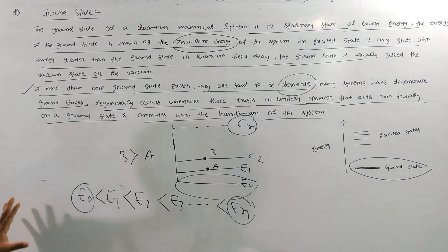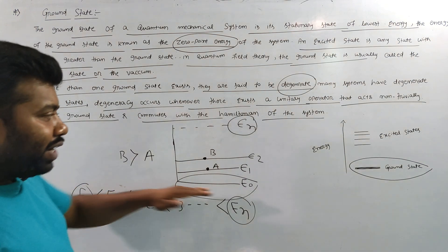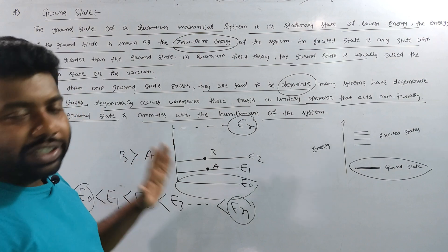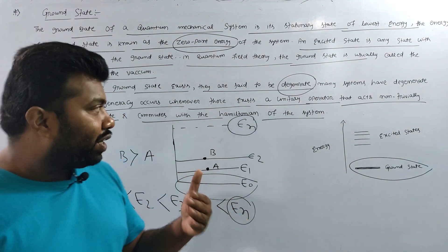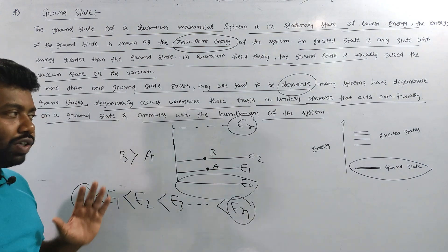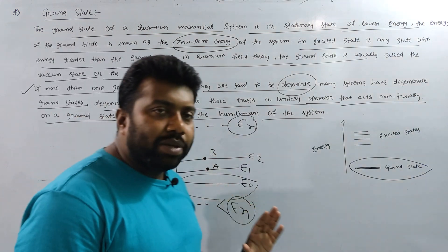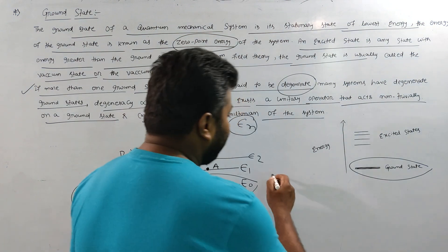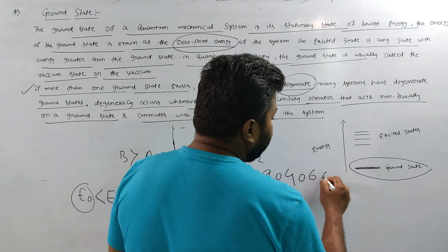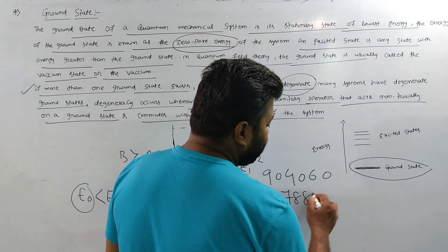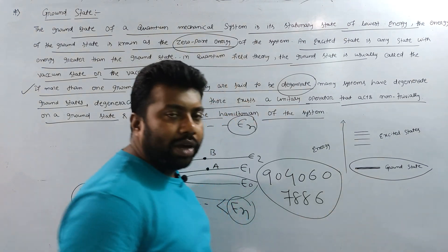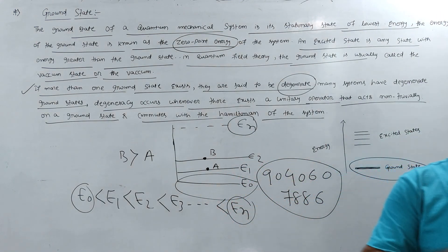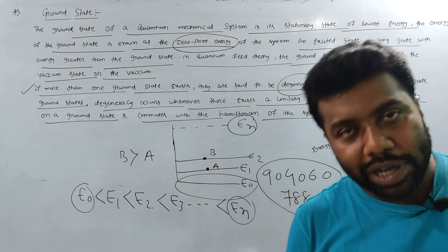I hope that you now know about ground state, which is the lower energy state, and the excited state. If there is more than one energy state which is a ground state, it is a degenerate state. You have to contact this number: 9040607886. Tuition and coaching is only 300 rupees per paper, or 1200 rupees per paper. Thank you for watching, students.